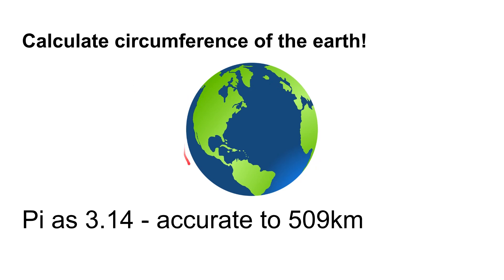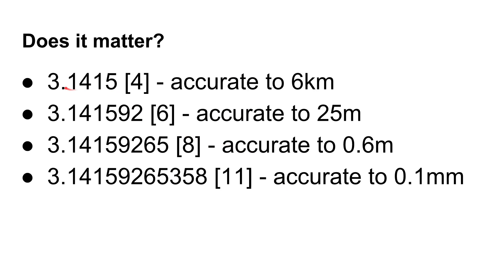Now the question is how accurate do we really need Pi to be? Well, if we're talking about things here on Earth — if we're trying to calculate the circumference of the Earth, for example — using 3.14, you're going to get an accuracy of around about 500 kilometres. If you use 3.1415, that's four decimal places, that accuracy increases to six kilometres. And then 3.141592 — six decimal places — gives you an accuracy to 25 metres. Eight decimal places will give you an accuracy to less than one metre. And if you're using 11 decimal places — 3.14159265358 — that will give you an accuracy within less than one-tenth of a millimetre. So for anything here on Earth, calculating with 11 or 12 places is going to be very, very accurate. If you want to go out to the size of the solar system or something like that, you might start to use 20, 30 or 40 places. But for normal day-to-day calculations, 11 or 12 places is enough, and we've calculated that using that infinite series.